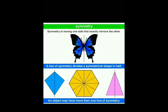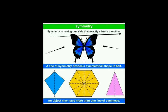Hello students, in Standard 7 our 14th chapter is Symmetry. The definition of symmetry is: symmetry is having one side that exactly mirrors the other. If we look at this figure of a butterfly, we can see the left-hand side and right-hand side both parts are the same. We draw a vertical line that represents a line of symmetry, so both sides become equal.